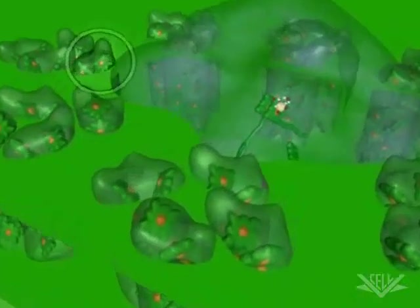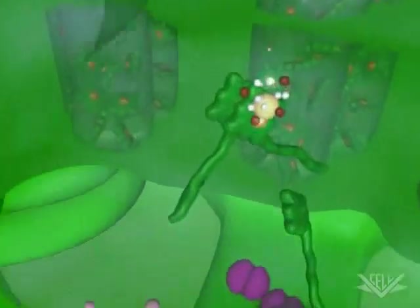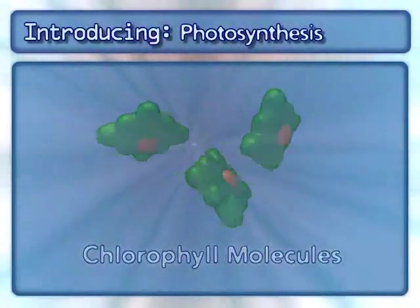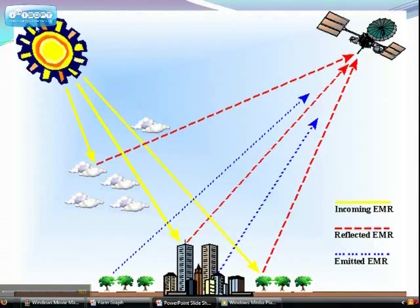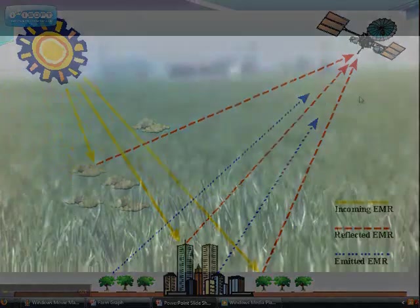When sunshine falls on green vegetation, some part of it is used for photosynthesis by the chlorophyll molecules. A part of the incident light is reflected, which is read by sensors mounted on Earth-orbiting satellites. A number of NASA satellites are busy doing this.